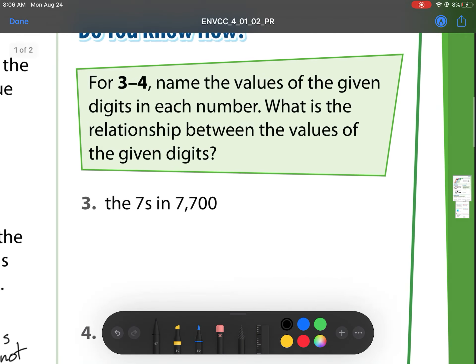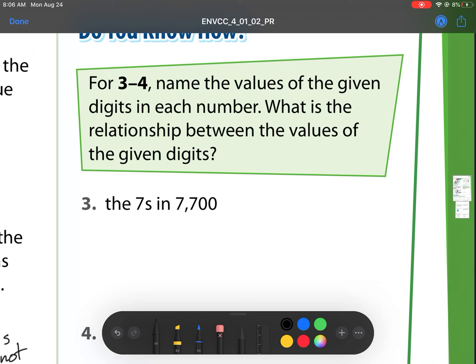Heading on to number three. Name the values of the given digits in each number. What is the relationship of the values of the given digits? So it's the sevens in 7,700. So we have 7,000. We also have 700. What is the relationship? Well, we're going to put in a complete sentence. The relationship is 7,000 is ten times as much as 700.